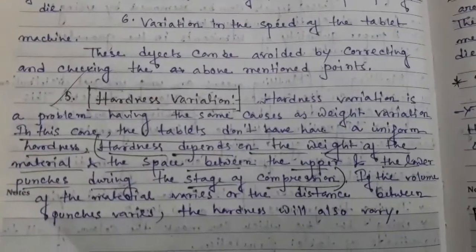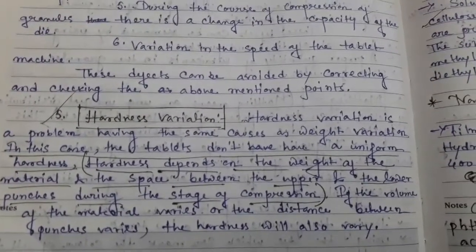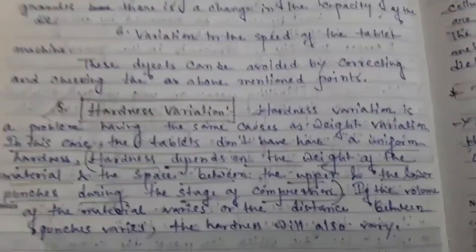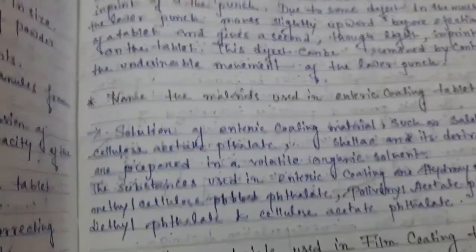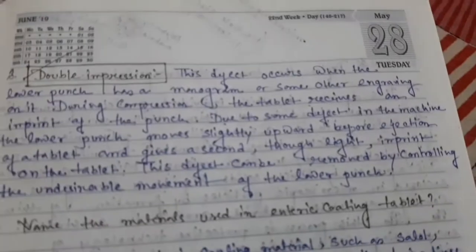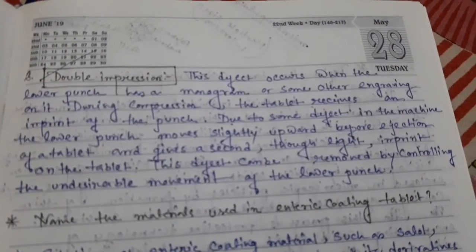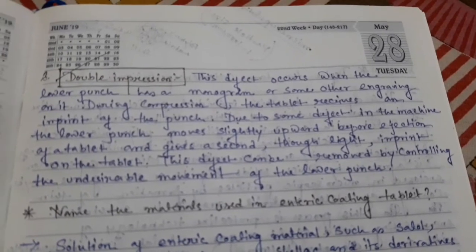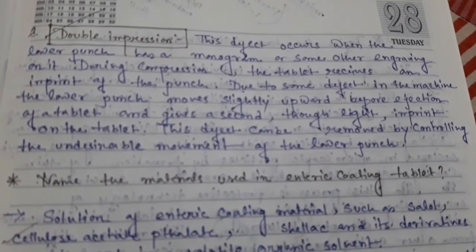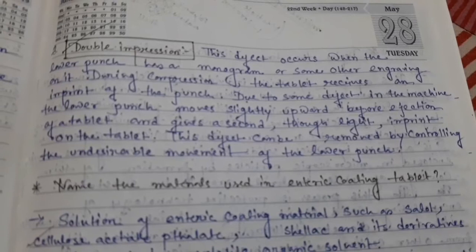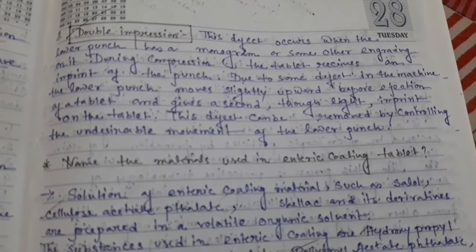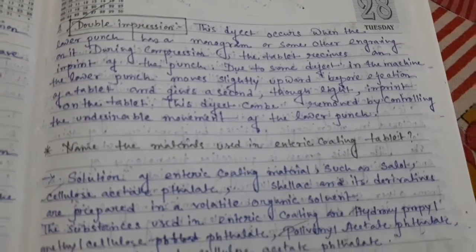Non-uniform flow of granules from the hopper to the die is another cause. Next: hardness variation. Hardness variation depends on the weight of the materials and the space between the upper and lower punches during compression. Next: double impression. This defect occurs when the lower punch has a monogram or some other image, and the lower punch moves slightly before the ejection of the tablet, giving a second impression.